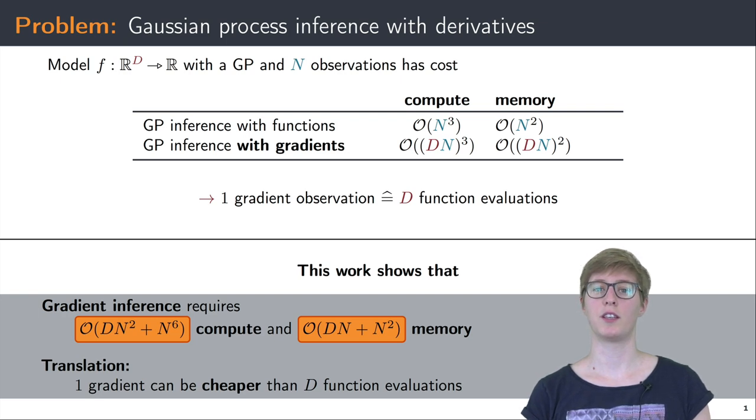In this work, we show that gradient inference can scale linearly with a dimension both in terms of computation and memory. The high level takeaway is that one gradient observation can be cheaper than d function evaluations in high dimensions.